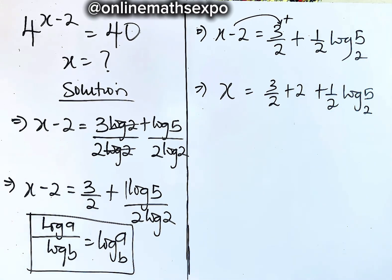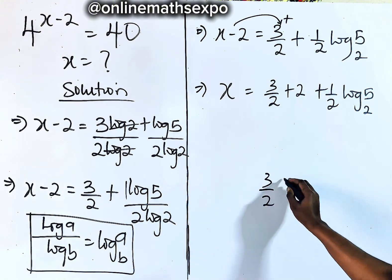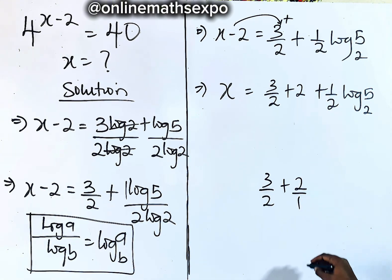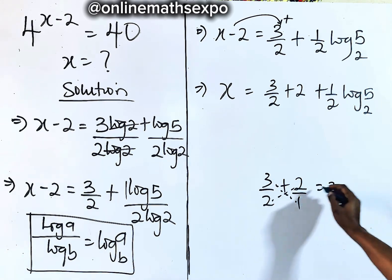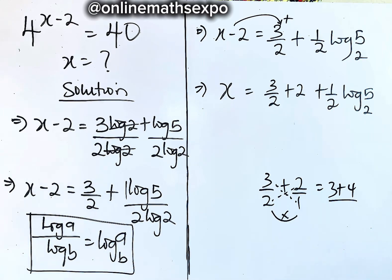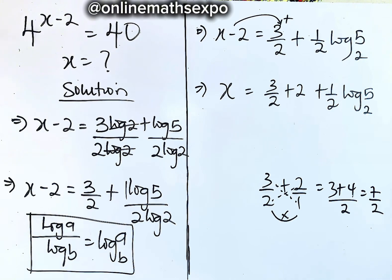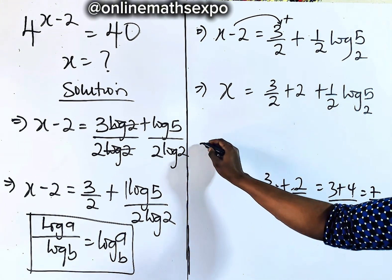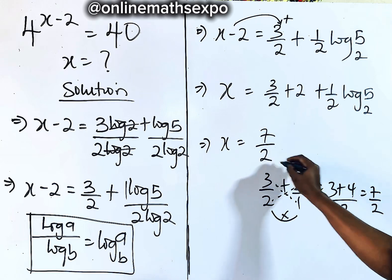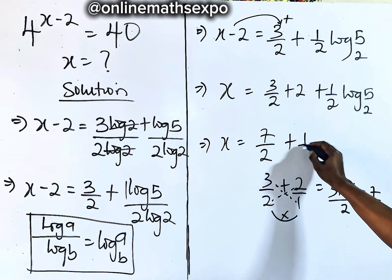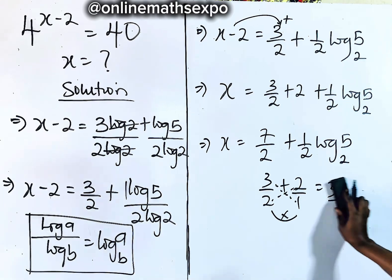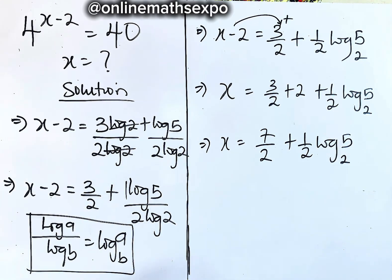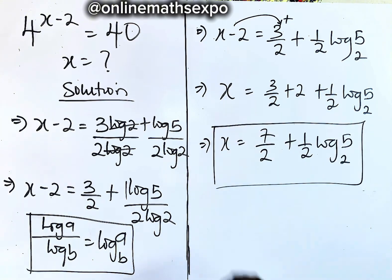To get x, remove the negative 2 by adding 2 to both sides. So we have x equals 3/2 plus 2 plus (1/2) log₂5. Now 3/2 plus 2 — converting 2 to 4/2 — gives 7/2. So x equals 7/2 plus (1/2) log₂5. This is our simplified value of x.